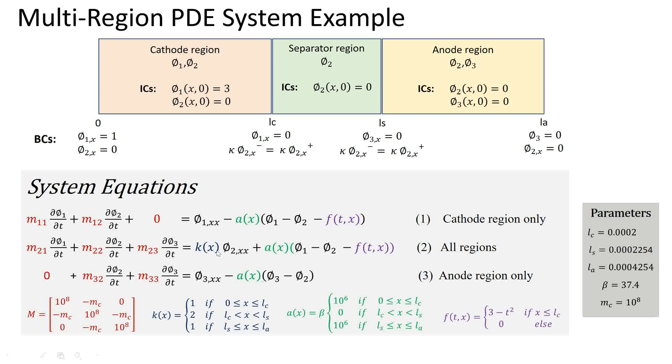The property k for equation two shown in blue is a discontinuous function of x. It takes the value one in the cathode and anode regions but takes the value two in the center region. Therefore it's necessary to impose a continuity condition for phi2 flux at both x equal LC and x equal LS which separate the three regions.